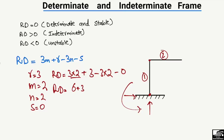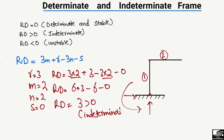Calculating: Rd = 3(2) + 3 − 3(2) − 0 = 6 + 3 − 6 − 0 = 3. Since Rd is greater than zero, this is again an indeterminate frame structure. Now you understand how to find the determinancy and indeterminancy of a frame structure using this simple formula.